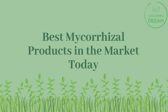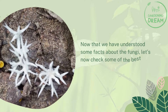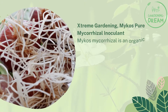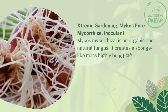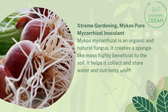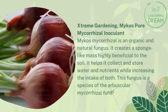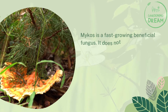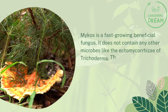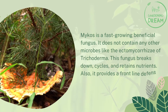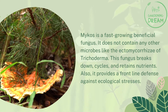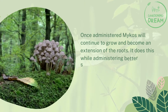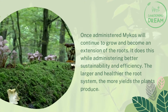Now that we have understood some facts about the fungi, let's check some of the best products in the market. Extreme Gardening Mycos Pure Mycorrhizal Inoculant is an organic and natural fungus that creates a sponge-like mass highly beneficial to the soil. It helps collect and store water and nutrients while increasing the intake of both. This fungus is a species of the arbuscular mycorrhizal fungi class. Mycos is a fast-growing beneficial fungus and does not contain any other microbes like ectomycorrhizae or Trichoderma. It breaks down, cycles, and retains nutrients, provides front-line defense against ecological stresses, and once administered will continue to grow and become an extension of the roots.